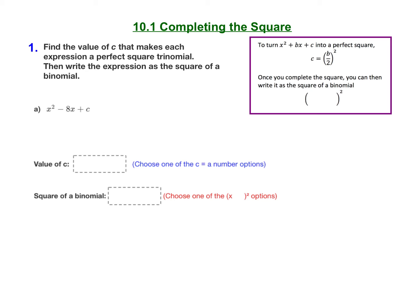Once you complete the square, you can then write it as the square of a binomial, and the shortcut for that is it will factor to x plus whatever b over 2 was before you squared it.